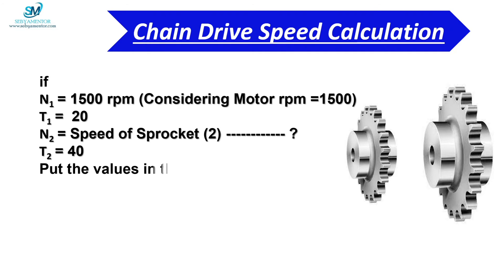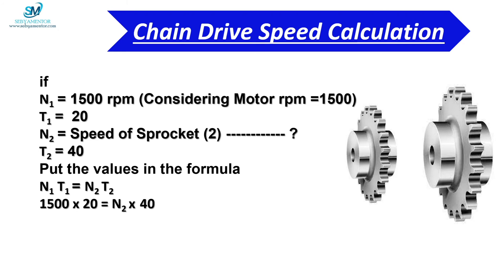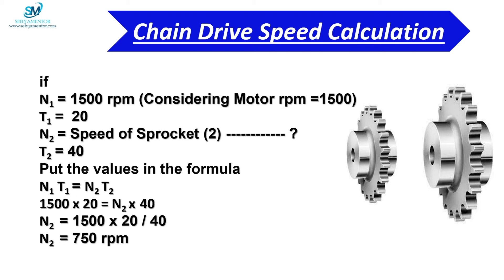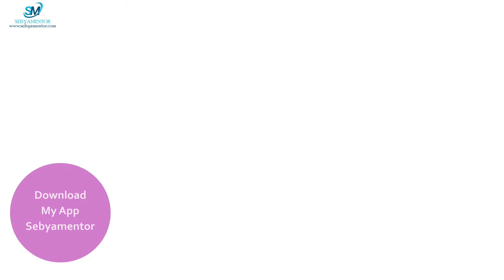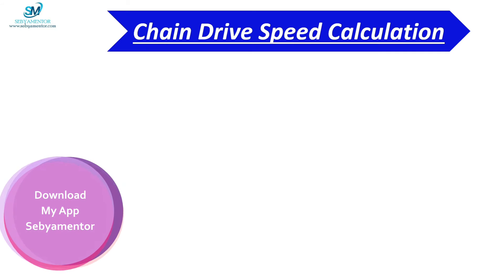If we put all these values in the formula N1 × T1 = N2 × T2, then we get: 1500 × 20 = N2 × 40. Therefore, N2 = (1500 × 20) / 40. After calculation, we get N2 = 750 rpm. So the speed of sprocket 2 is 750 rpm.